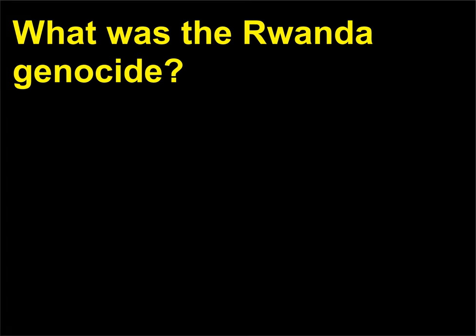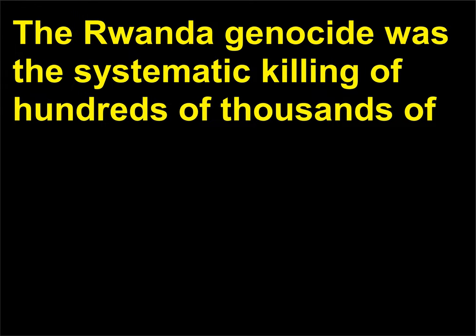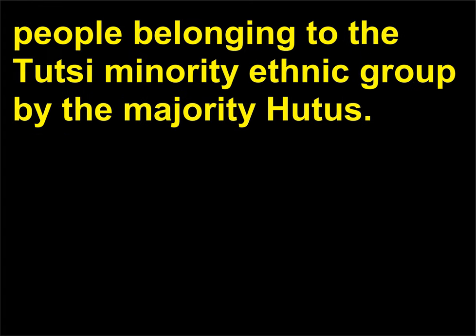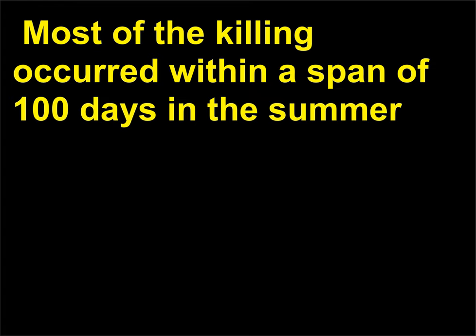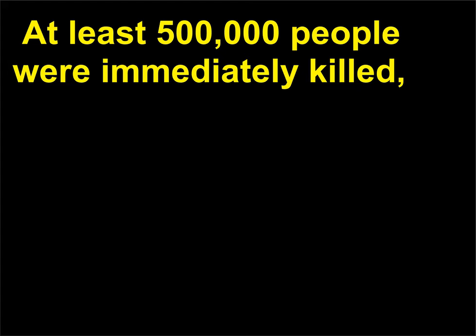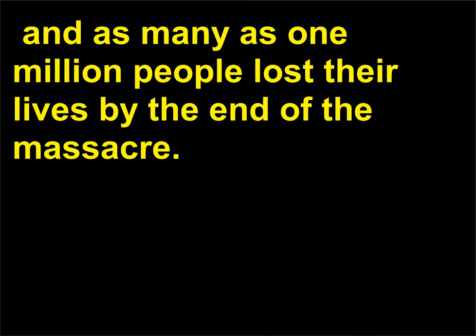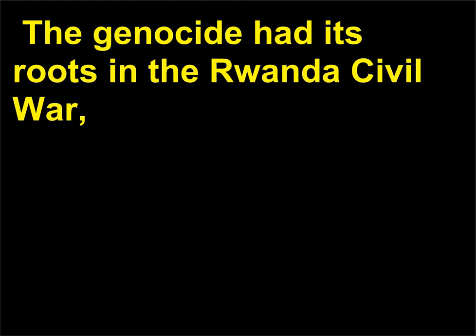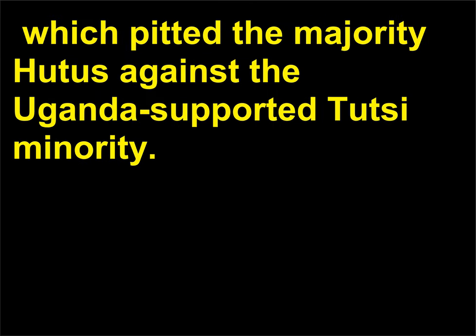What was the Rwanda Genocide? The Rwanda Genocide was the systematic killing of hundreds of thousands of people belonging to the Tutsi minority ethnic group by the majority Hutus. Most of the killing occurred within a span of 100 days in the summer of 1994, carried out by two Hutu extremist military groups. At least 500,000 people were immediately killed, and as many as one million people lost their lives by the end of the massacre. The genocide had its roots in the Rwanda Civil War, which pitted the majority Hutus against the Uganda-supported Tutsi minority.